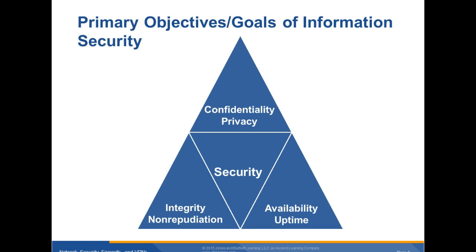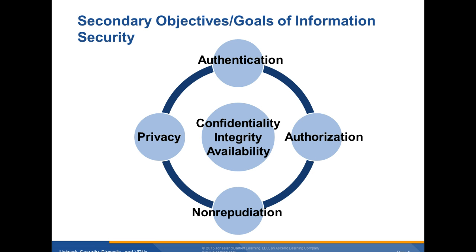The primary objectives and goals of information security are confidentiality and privacy, integrity and non-repudiation — non-repudiation means that you cannot say it did not come from you — and availability or uptime. Secondary objectives include authentication, privacy, authorization, and non-repudiation, all surrounding the core objectives of confidentiality, integrity, and availability.